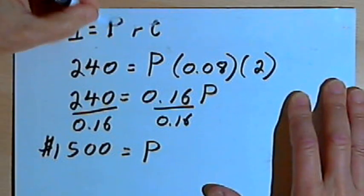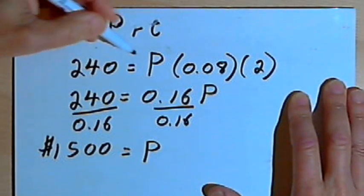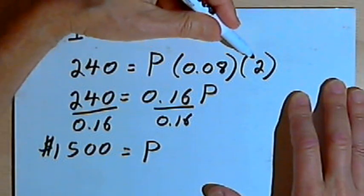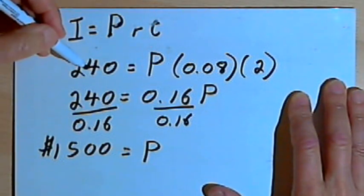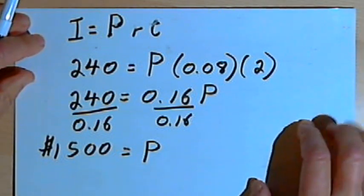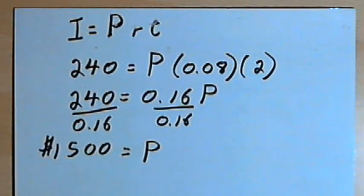So in other words, if I invested $1,500 at 8% for 2 years, I would end up with $240 in interest. So that's basically the way simple interest works. Take care. I'll see you next time.